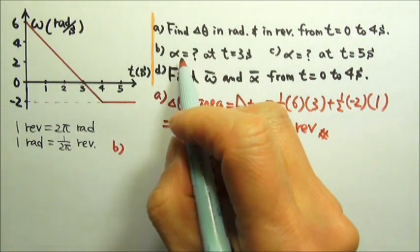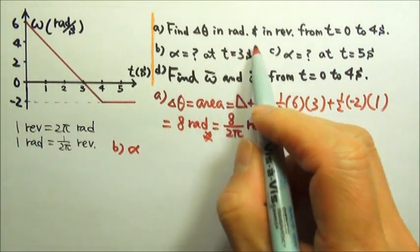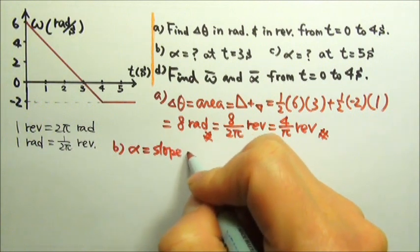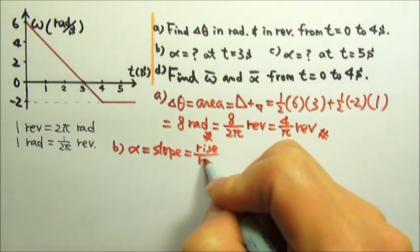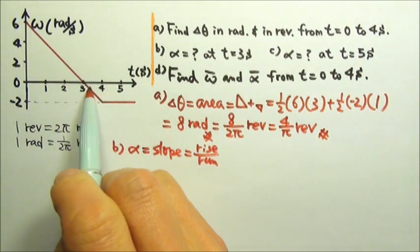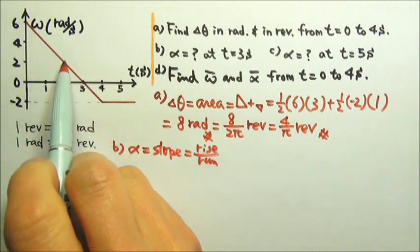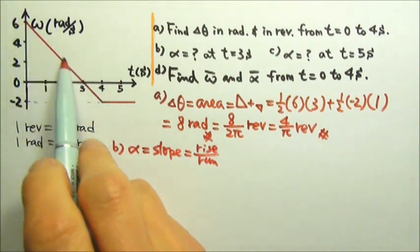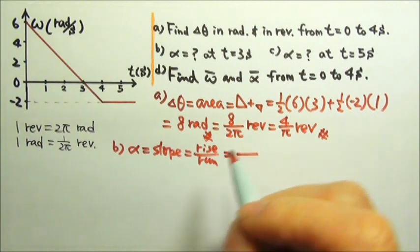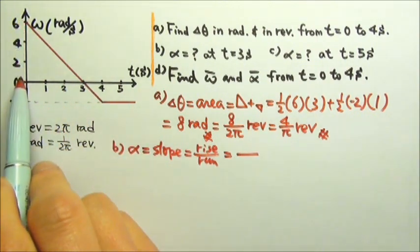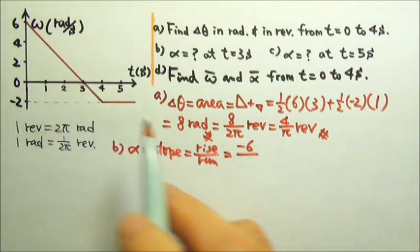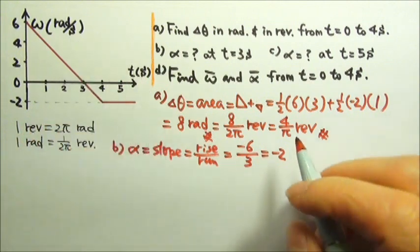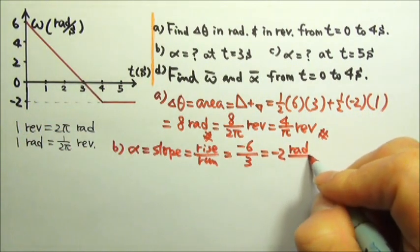In Part B, we want to find the angular acceleration at a certain moment. The instantaneous angular acceleration is the slope of this graph, so we want the rise over run. At t equals three seconds, the slope is the same as any part of this straight line. Using the full triangle, the rise goes from six to zero, so the rise is negative six. The run goes from zero to three, so we get negative two radians per second squared.